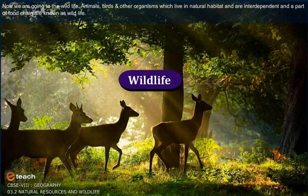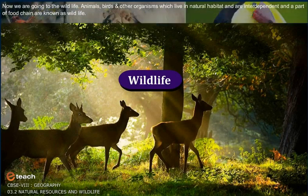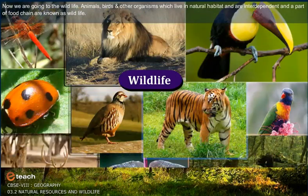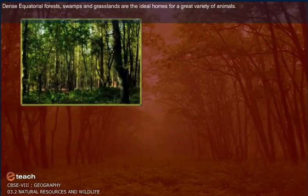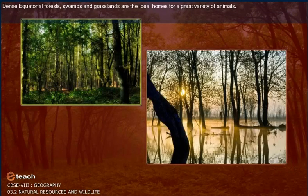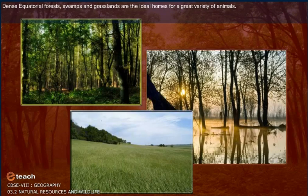Now we move to wildlife. Animals, birds and other organisms which live in natural habitat, are interdependent and a part of the food chain, are known as wildlife. Dense equatorial forests, swamps and grasslands are the ideal homes for a great variety of animals.